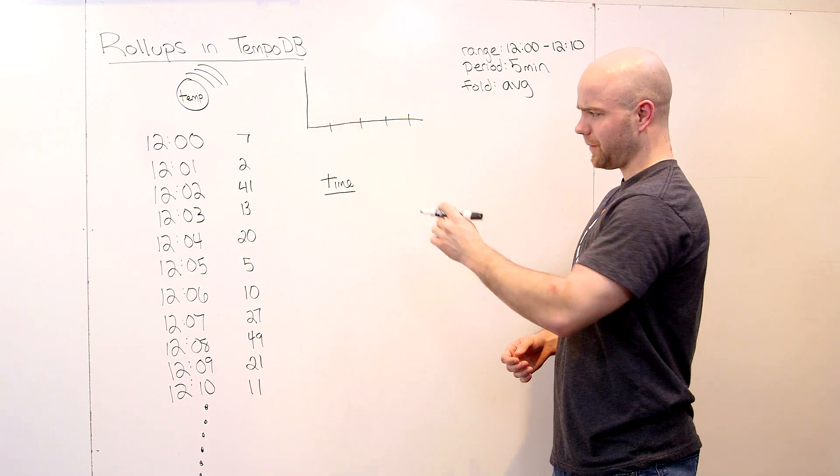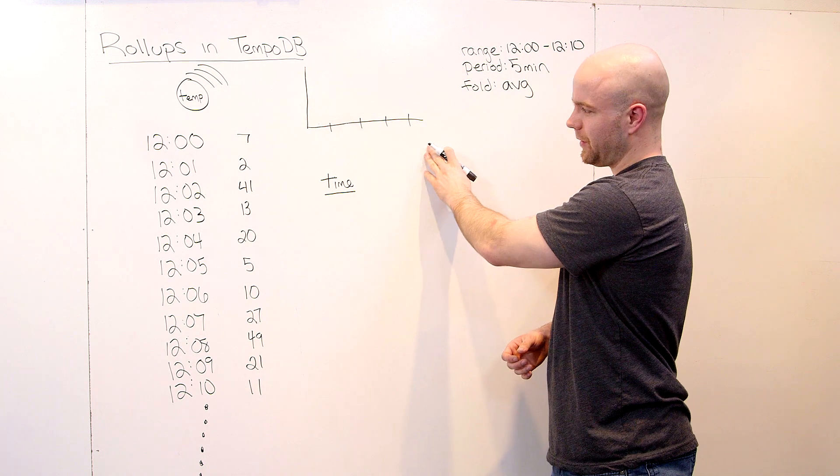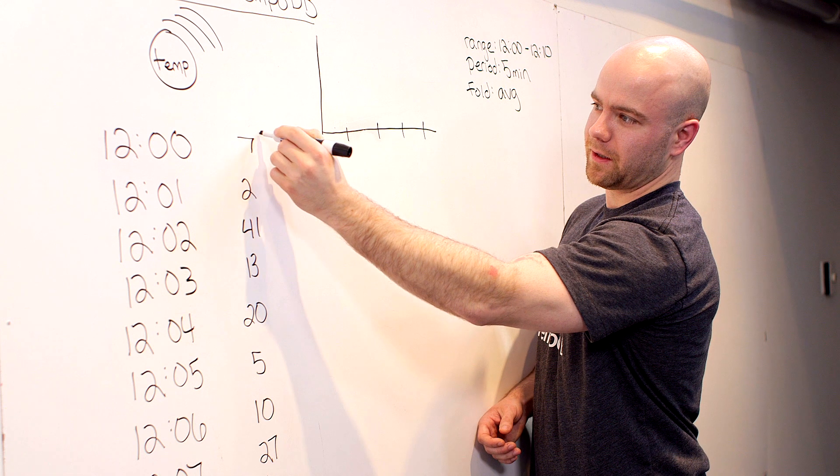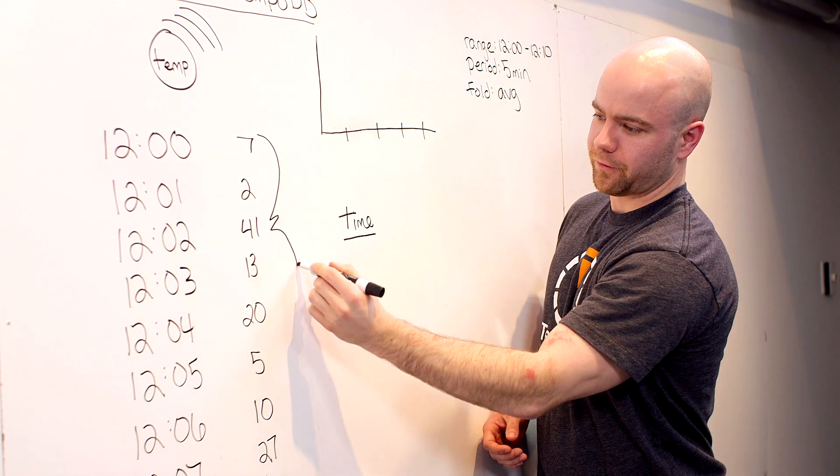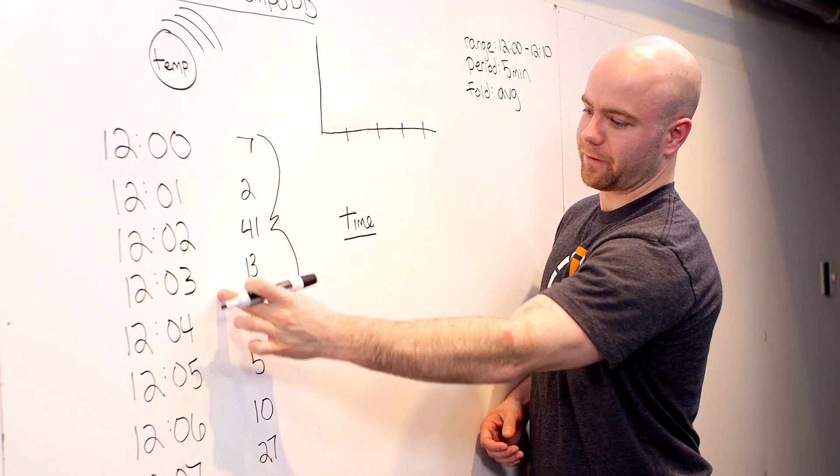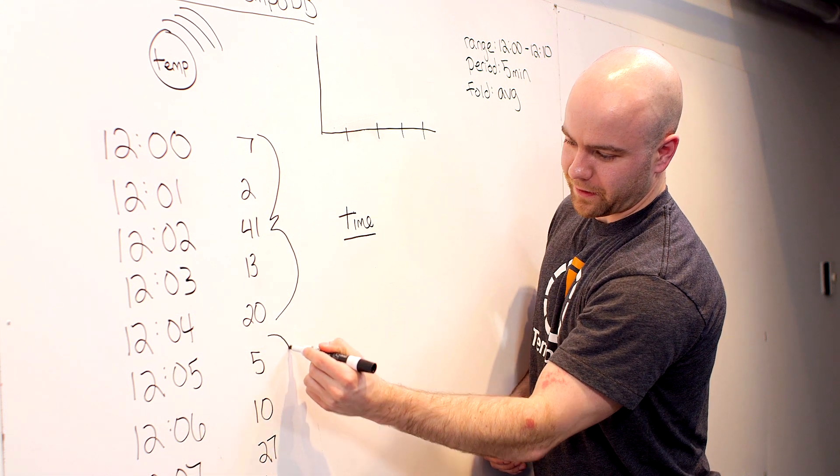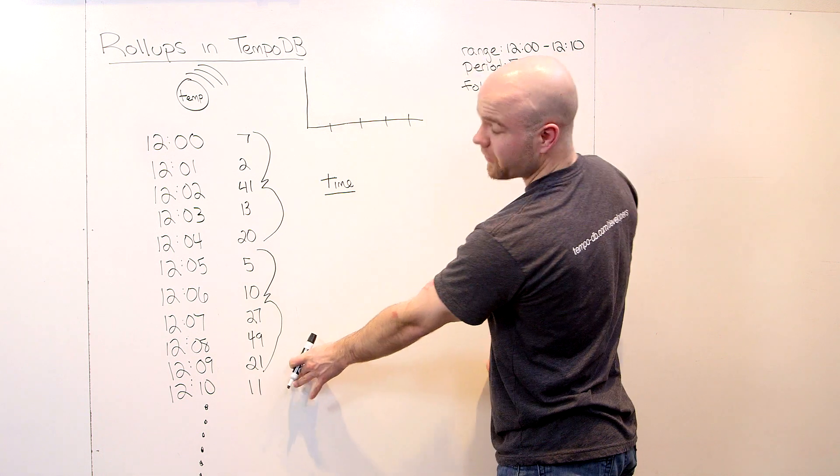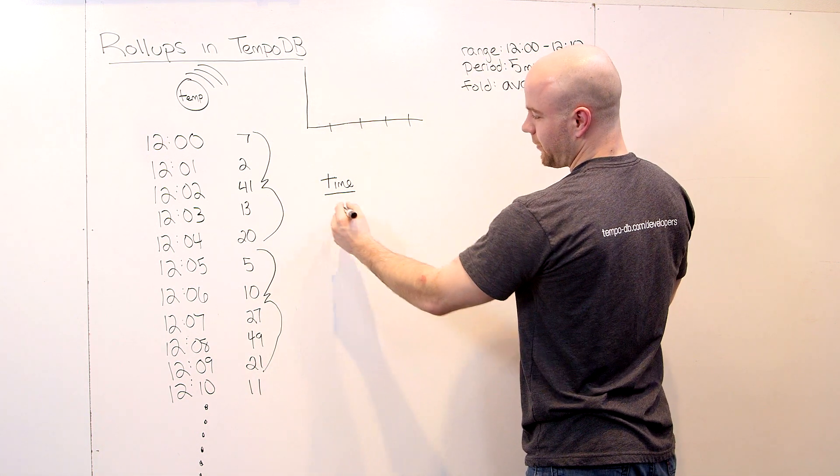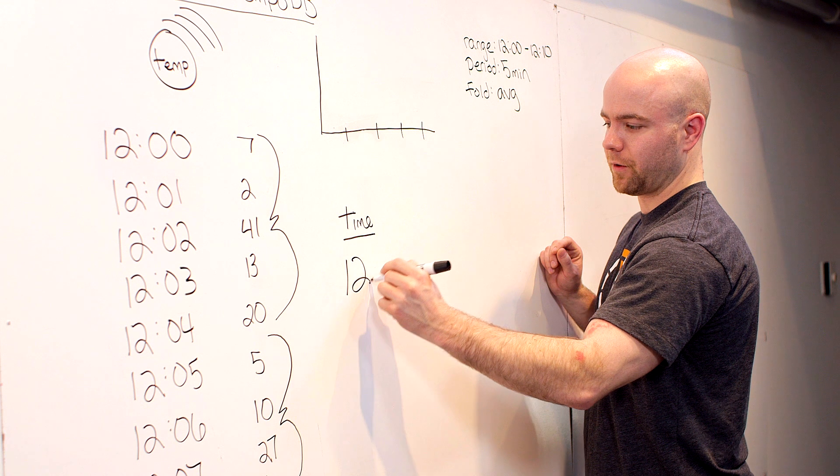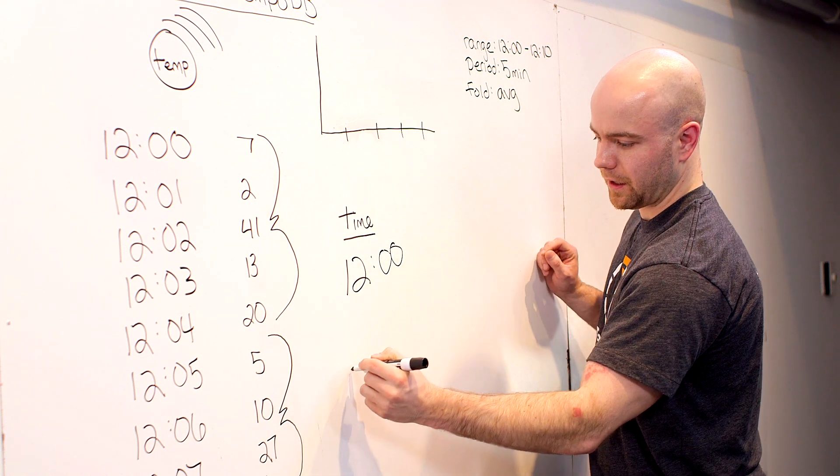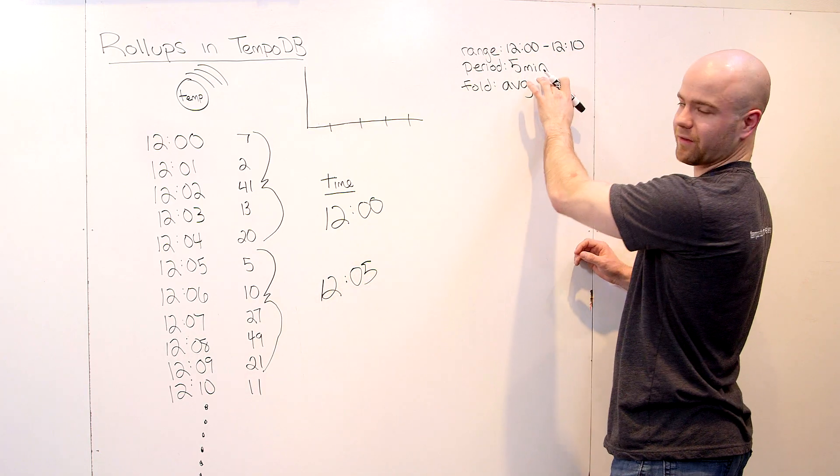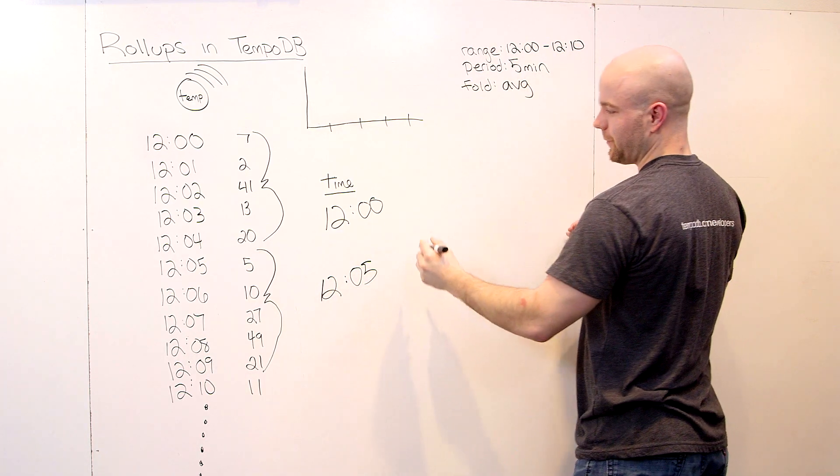So when you make this query into TempoDB and it rolls up the data, you're going to get your data in five-minute buckets. And you'll start at 12 and go to 12:04 in the first five-minute bucket. Then from 12:05 to 12:09 because roll-ups are exclusive of the end time. So we should see back two points from the API then, one at 12 and one at 12:05.